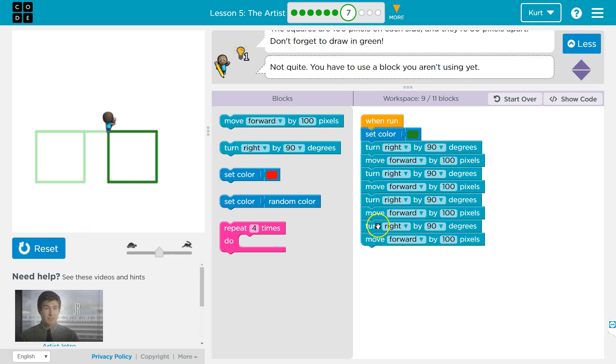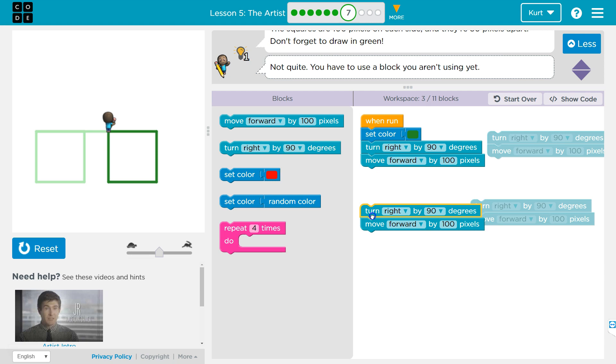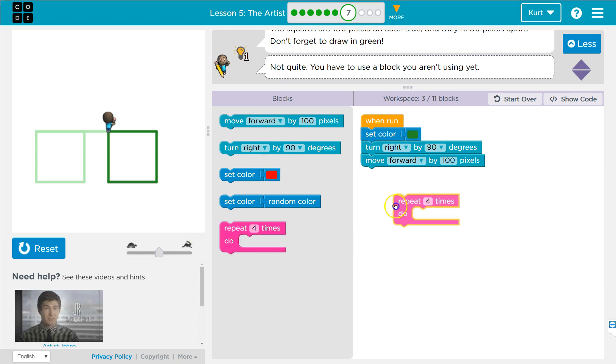Notice, all of this is the same. Turn right, move forward 100. Turn right, move forward 100. Turn right, move forward 100. Because I'm drawing four sides. So I need to turn to draw the corner, and then draw a side. Turn to draw the corner, and draw a side. So instead of writing this, or using these blocks four times, I'm going to get rid of them, and grab a repeat.